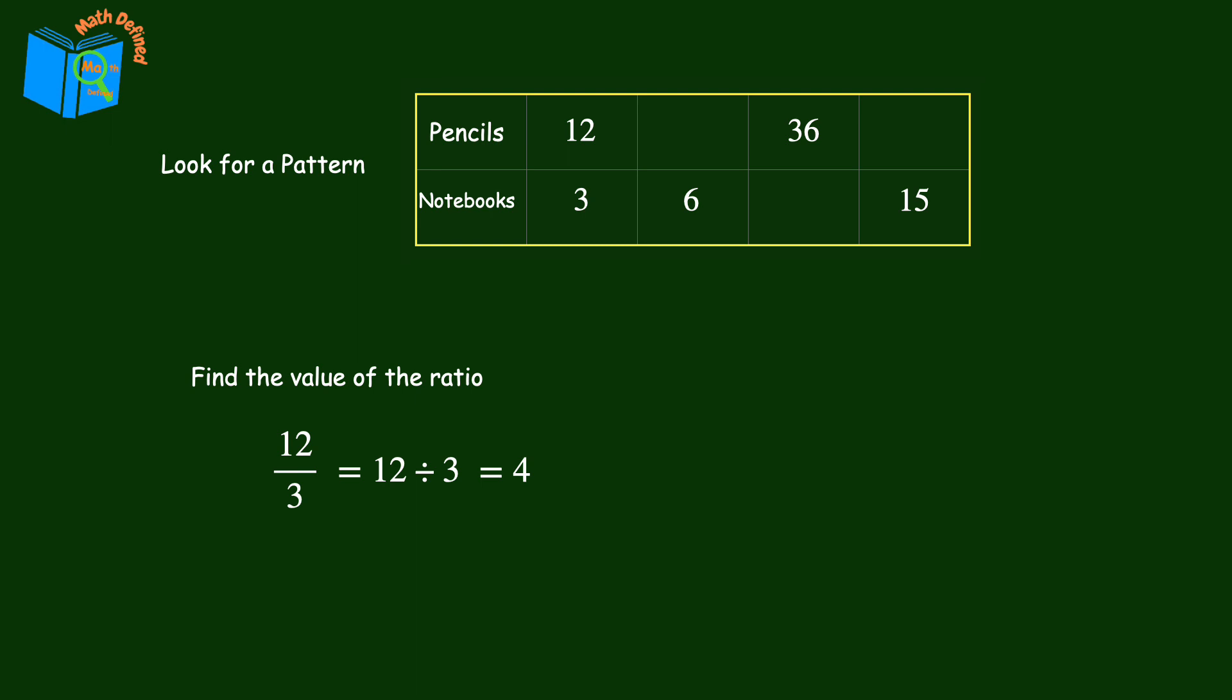Let's look at the first ratio in the table, 12 over 3, again. We use the value of the ratio as a multiplicative pattern to find the numerator or the first quantity in the ratio. Multiplying 3 by 4 results in 12. And we can use this multiplicative value to find all the missing values in the table. If there are 6 notebooks, 6 times 4 is 24. There are 24 pencils. Next, how many notebooks do we need if we have 36 pencils? Or, what times 4 is 36? 9 times 4 is 36, so we would need 9 notebooks.